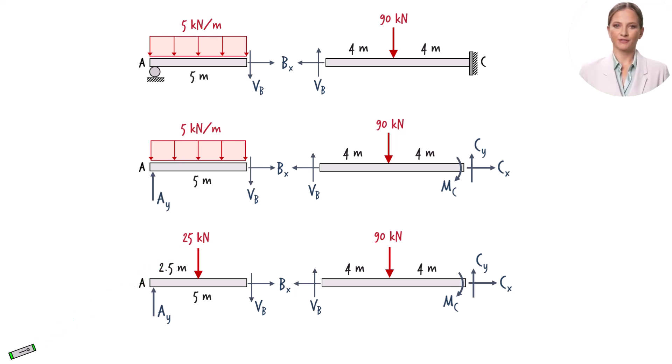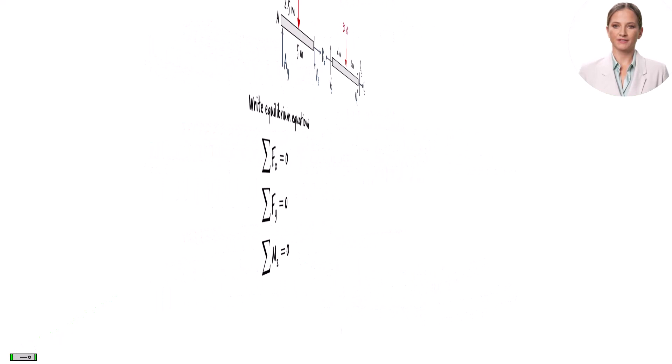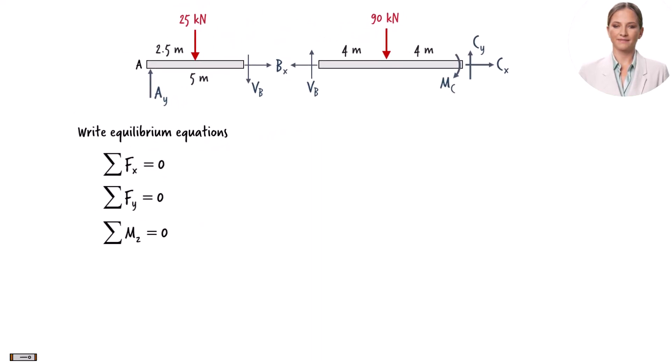We are now ready to write the three equilibrium equations for each beam segment. The sum of the forces in the x direction, the sum of the forces in the y direction, and the sum of the moments about the z-axis must be zero. The equilibrium equations for the left segment are written. For the right segment, the equilibrium equations can be written as shown.